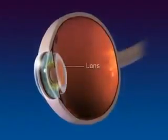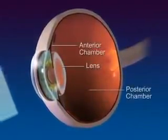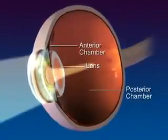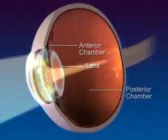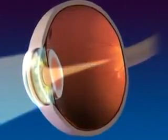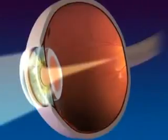The lens is located behind the pupil and between the anterior and posterior chambers. The lens is a transparent, flexible, biconvex structure that bends or refracts light rays so they focus on the nerve cells of the retina.